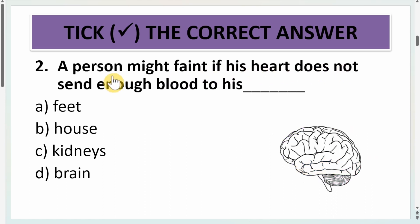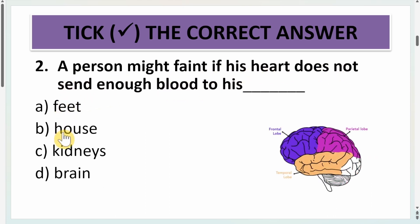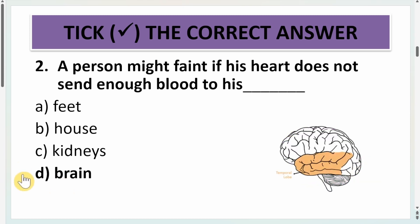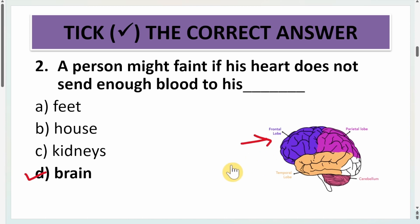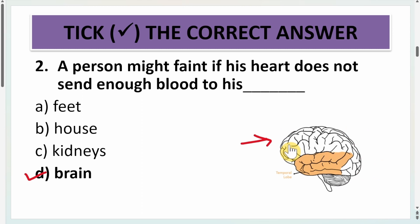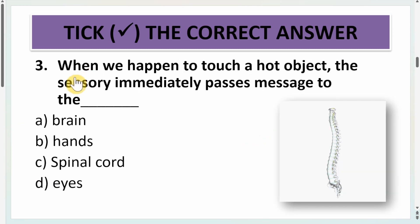Second question: a person might faint if his heart does not send enough blood to his — feet, house, kidneys, or brain? What should be the answer? Well, the answer is brain. As you can see from the picture over here, these are the different parts of the brain, and if a person doesn't get blood to his brain, he might faint.